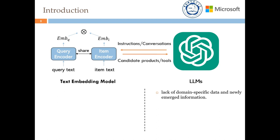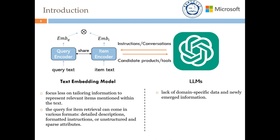Previous studies have attempted to create a general-purpose text embedding model for universal information retrieval. However, general-purpose text embedding models often fall short of achieving satisfactory zero-shot performance for specific tasks like item retrieval. The main reason for their suboptimal performance is that these models tend to produce general semantic representations for text similarity, focusing less on tailoring information to represent relevant items mentioned within the text and disregarding other unrelated details.